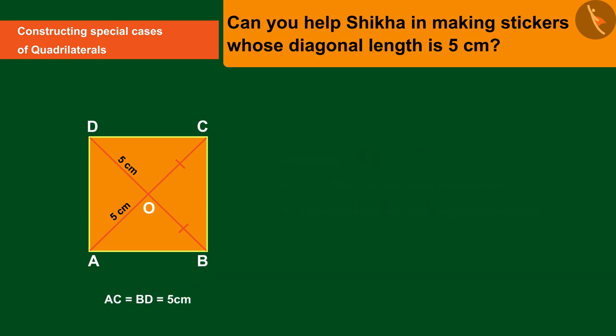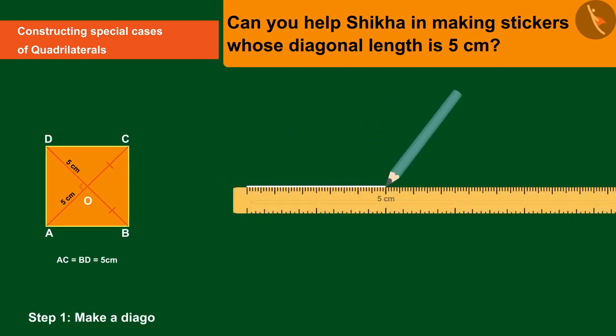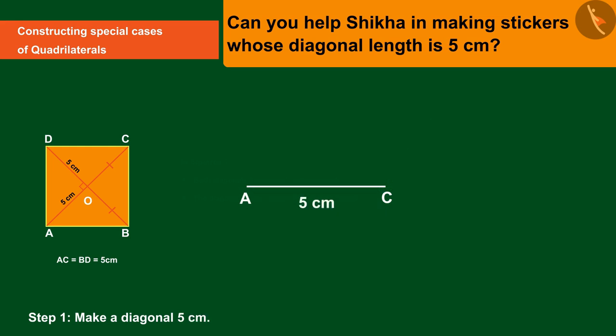And the diagonals of the square bisect each other, which means all these angles would be equal to 90 degrees. Draw diagonal AC equals five centimeters. Since both diagonals bisect each other at right angles, make a perpendicular bisector of AC which will intersect it at point O.